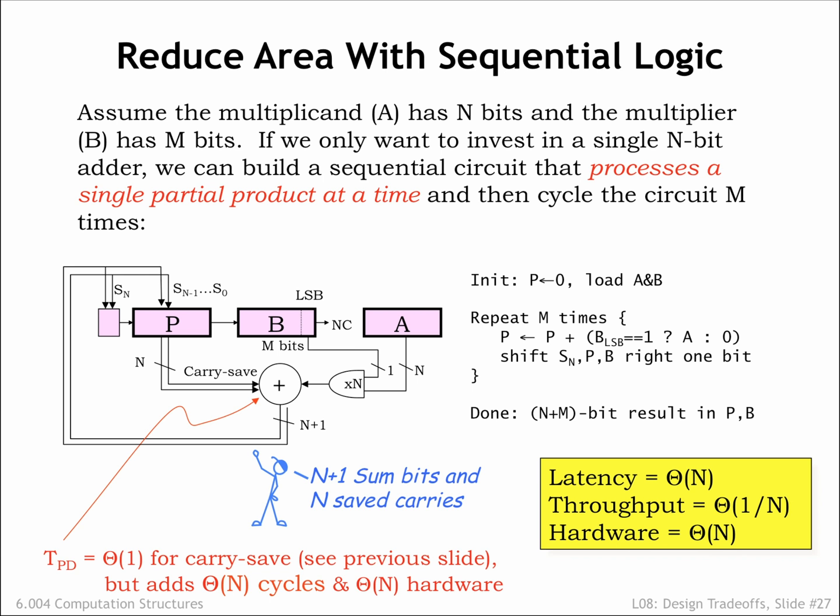This completes our little foray into multiplier designs. We've seen that with a little cleverness we can create designs with order 1 throughput, or designs with only order N hardware. The technique of carry-save addition is useful in many situations, and its use can improve throughput at a constant hardware cost, or save hardware at a constant throughput.